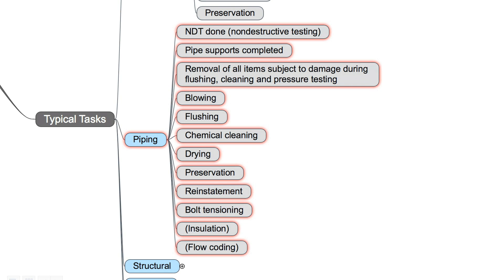Blowing, flushing, chemical cleaning, drying, preservation, reinstatement, bolt tensioning. Insulation and flow coating is included as well, but I put it here in brackets because during this time not all parts of the pipe will be completely insulated. Normally, only the straight pipes will be insulated and the flange connections will be free for later checking and, for example, if pre-commissioning tasks start later, for opening the flanges and to blow in or blow out. Flow coating will be done usually later as well.